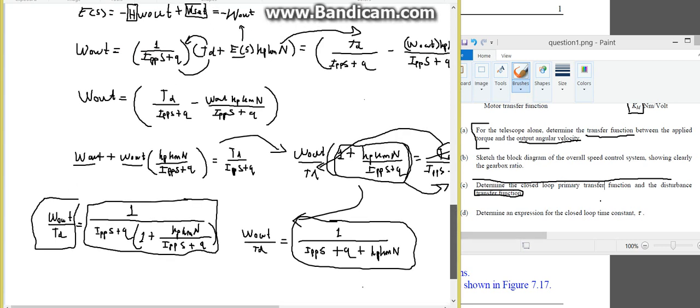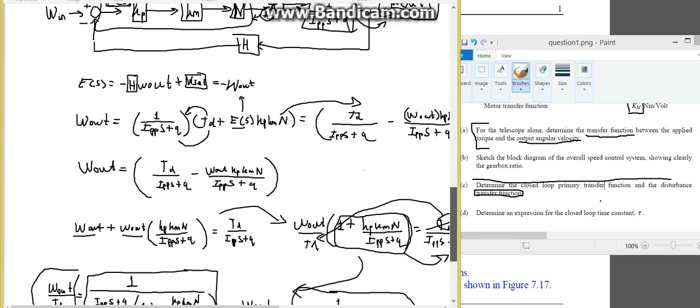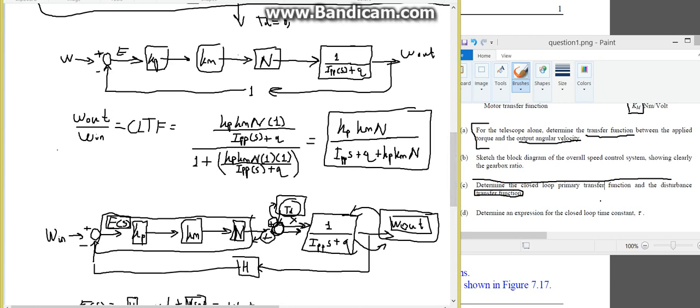with the disturbance included this time. And your transfer function for your closed loop block diagram excluding the disturbance, and you'll get this as a result.